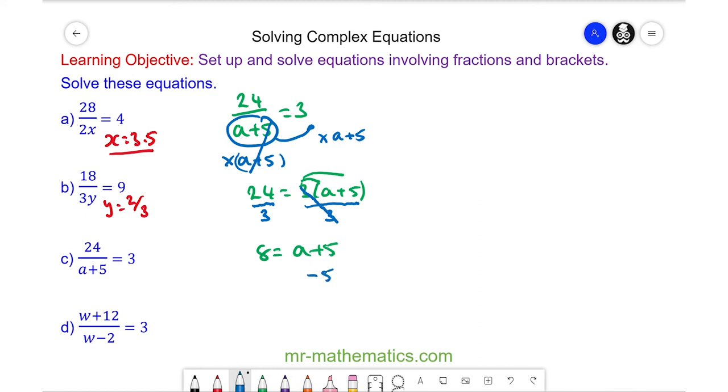We can take away 5 from both sides and these will cancel. So we have 3 is equal to a.